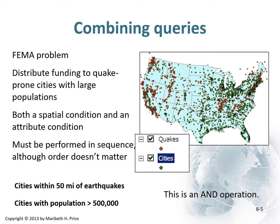Let's look at combining queries. We've got a FEMA problem — we're trying to figure out how to distribute funding to earthquake-prone cities with large populations. We need to address both a spatial condition and an attribute condition, performed in sequence, although the order doesn't specifically matter. We're looking for cities that are within 50 miles of earthquakes with populations greater than 500,000. This is an AND operation — we're looking for places that meet both criteria.